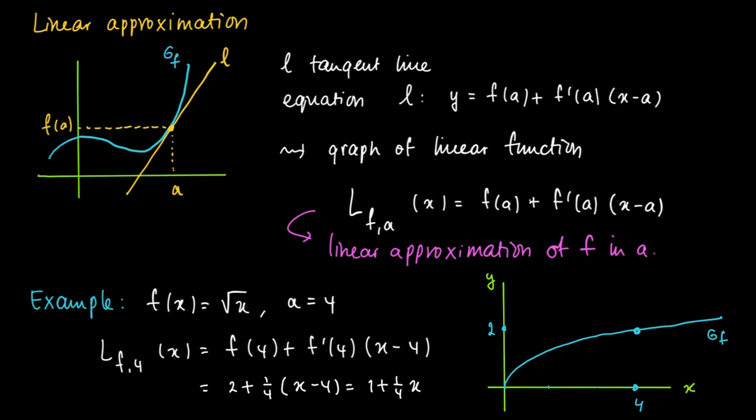And in the picture we see the following. So we have the graph of the function f and look at 4. Then the graph of the function L f for the linear approximation is the tangent line in 4.